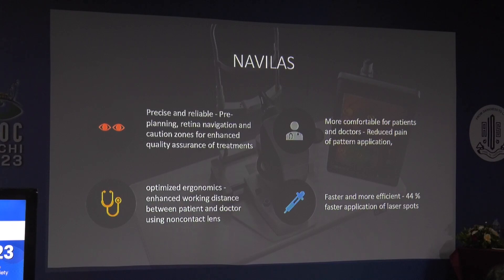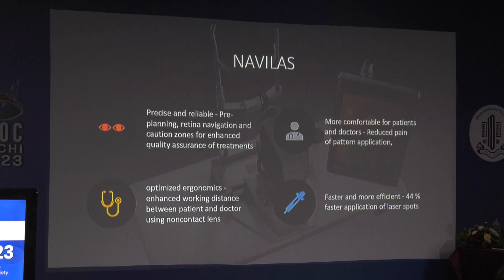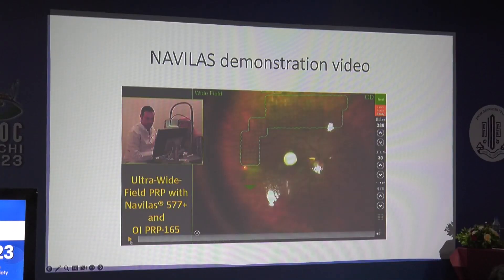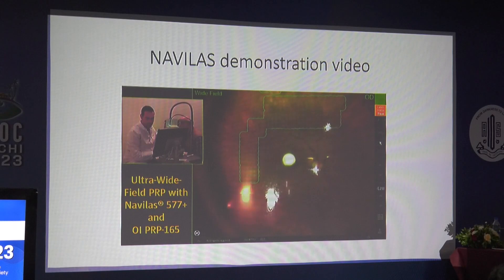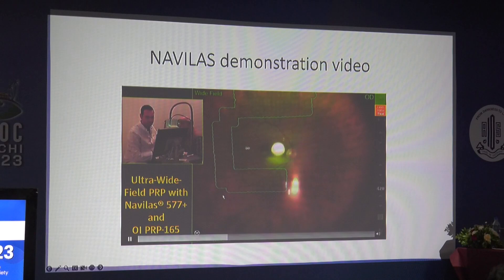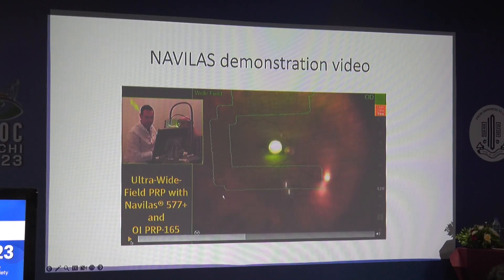Nebulas is a more automated form of Pascal laser, developed around 10 years ago. You can incorporate a fundus photograph into the machine. It has automatic features to avoid hitting the optic disc and macula, and has pre-set patterns that complete the laser for you. The treatment pattern is pre-planned and you just need to observe it being executed. This is the most advanced form of Pascal laser available today.